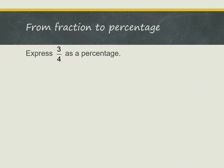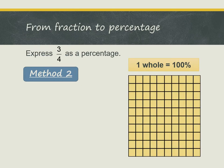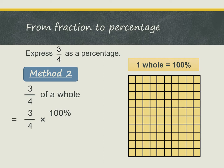Now let's look at Method 2. In Method 2, you must remember that 1 whole is 100%. So 3 quarters is 3 quarters of a whole, and 3 quarters of a whole is 3 quarters times 100%. We can simplify this — notice that we can divide by 4 — and we get the answer 75%.